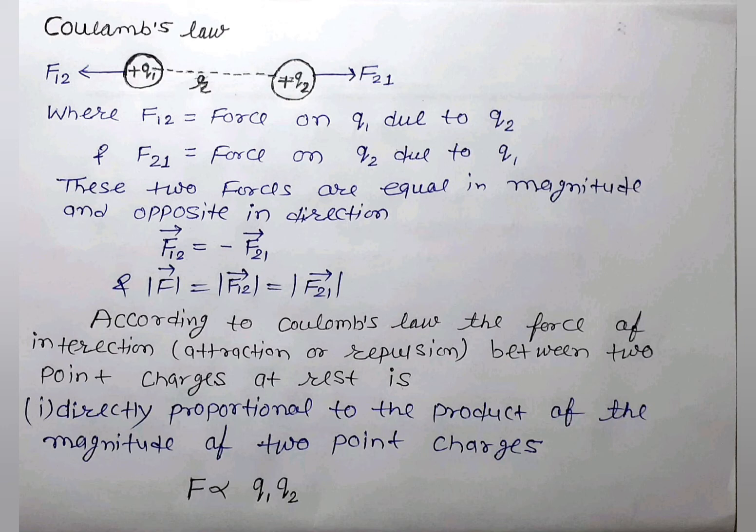These forces are equal in magnitude and opposite in direction, which means F12 equals minus F21, and |F12| equals |F21|. So finally we come to the statement of Coulomb's law.